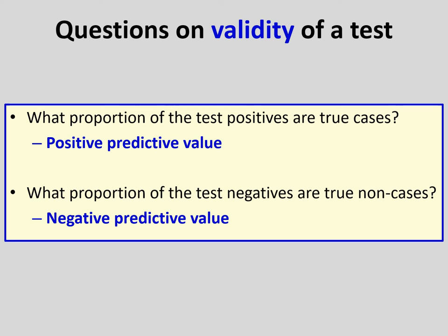When thinking about validity, we also consider positive predictive value (PPV) and negative predictive value (NPV). For PPV, the question is: what proportion of the test positives are true cases? For NPV, the question is: what proportion of the test negatives are actually true non-cases?